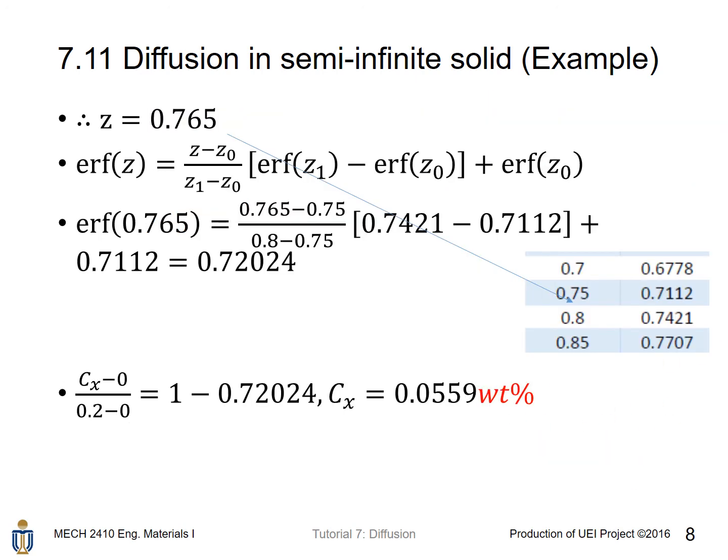We find that z is equal to 0.765. Using the error function table, we find that the z value specified is not shown. Then we must use interpolation. Using the interpolation formula here, we find that erf(0.765) is equal to 0.72024.